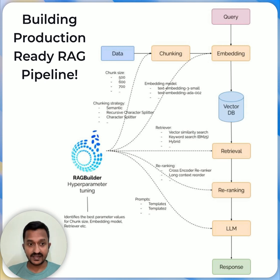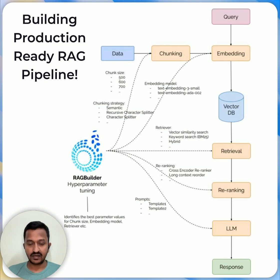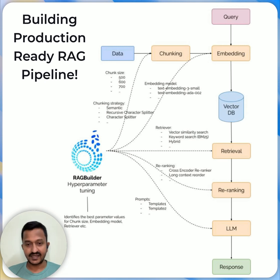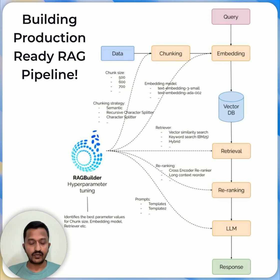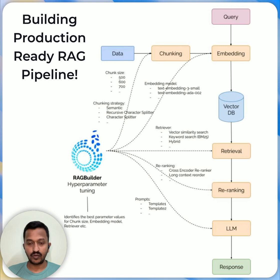This RAG Builder from Krux AI is an easy-to-use tool to help you evaluate the optimal RAG configuration for your use case. RAG Builder takes your data as an input and runs hyperparameter tuning on various RAG parameters like chunk size, embedding model, et cetera, evaluating multiple configurations. It basically comes up with a dashboard where you can see the top-performing RAG setup, and in one click generate the code for that RAG setup — going from your RAG use case to a production-grade setup in just minutes.